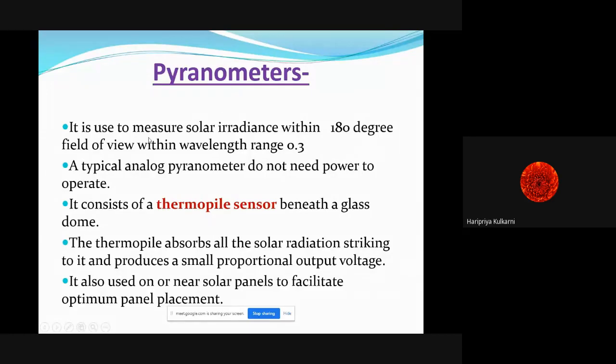Pyranometer is used for measurements of solar irradiation with 180-degree field because the dome is adjusted in that way, within a wavelength range of 0.3 micrometers. Typical analog pyranometers do not need power to operate because they make use of a thermocouple thermopile sensor beneath a glass dome. For thermocouple, it is an active transducer. For passive transducers you need external supply, but for active sensors you don't need any external power source.